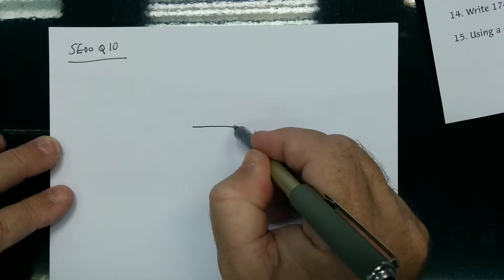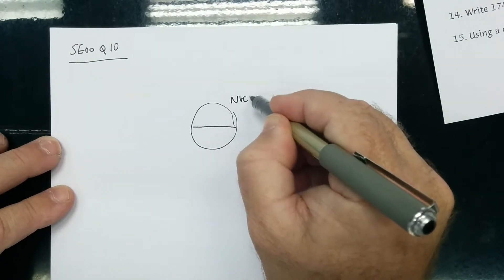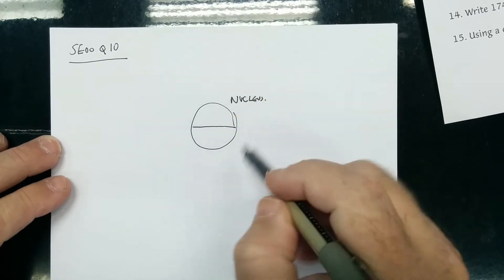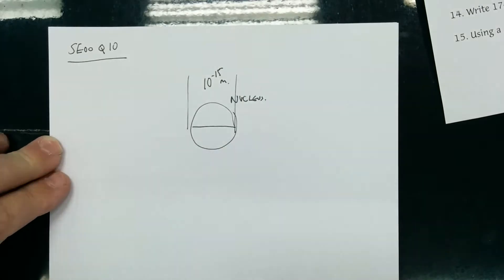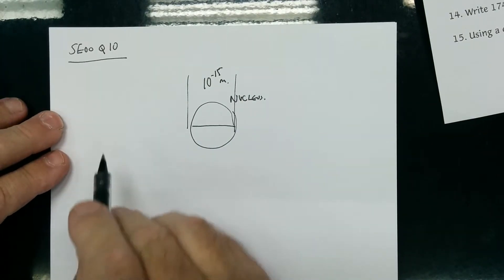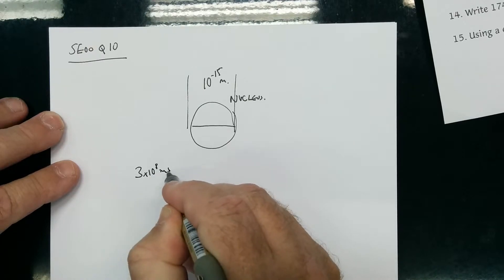Here's the hydrogen atom nucleus. We know that a nucleus has roughly 10 to the minus 15 meters. Now if the light is moving at 3 times 10 to the 8 meters per second, how long does it take to go across the nucleus?